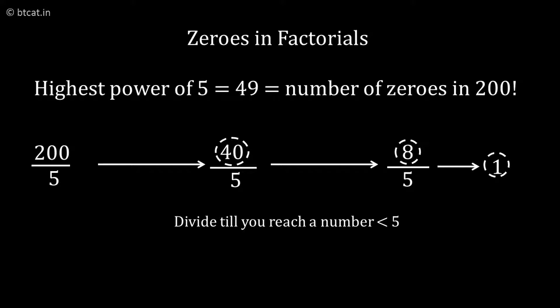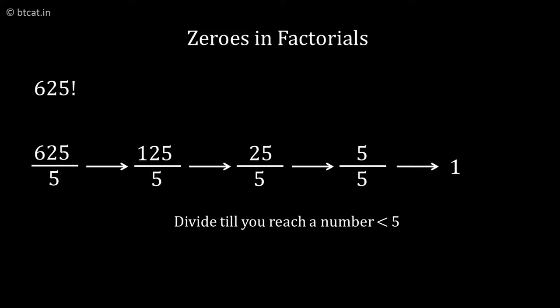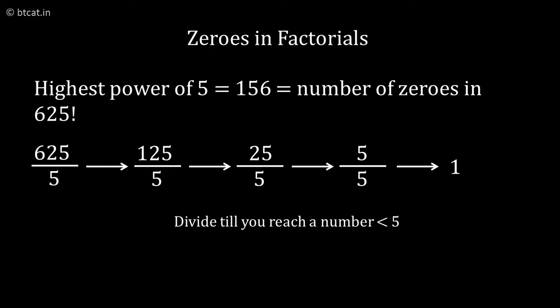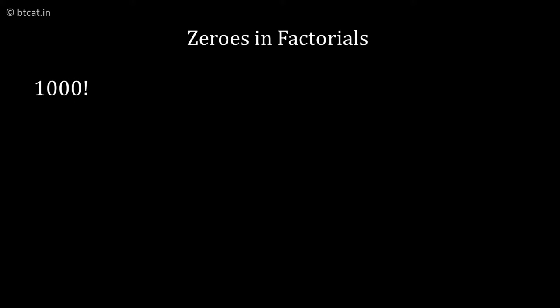How many zeros are there in 625 factorial? First divide by 5, we get 125. Again divide by 5, we get 25. Again divide by 5, we get 5. Again divide by 5, we get 1. So what is the answer? 125 plus 25 plus 5 plus 1. If you add them, this is 156 zeros in 625 factorial.